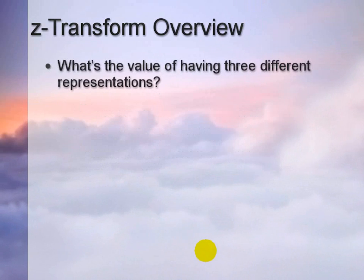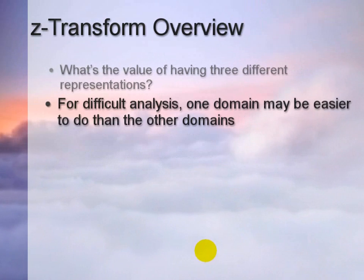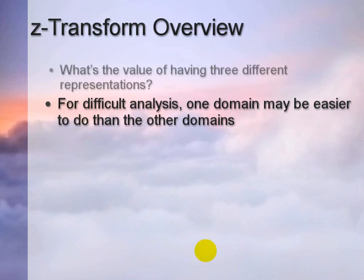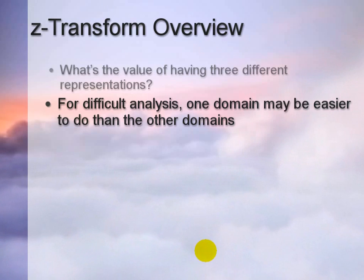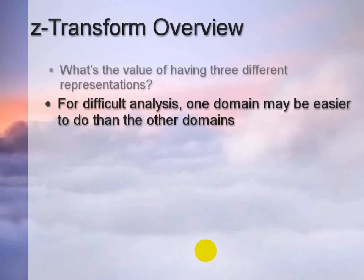You may ask: what's the value of having three different representations? Well, the answer is that for difficult analysis, one domain may be easier to work in than another. Therefore, increased understanding results from developing skills in moving from one representation to another. For example, the cascade combination of linear time-invariant systems, which in the N-domain seems to require the less familiar technique of convolution, is converted in the Z-domain into the more familiar algebra.